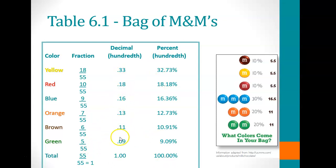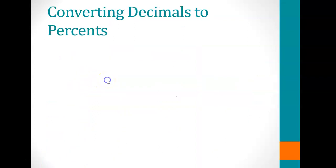When you add all these together, they give you 1, or 100%. This confirms the total of 55 M&M's in the bag, with each color shown as a fraction, as a decimal, and as a percentage.